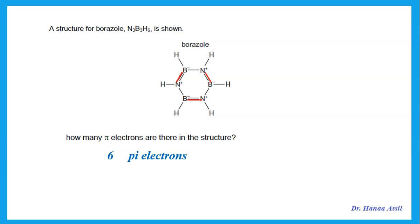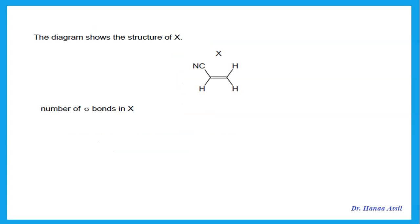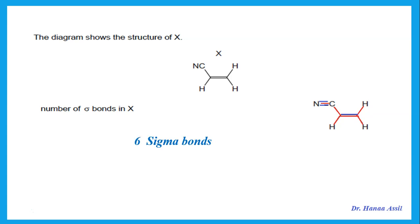The diagram shows a structure — what is the number of sigma bonds? Do not forget that the CN actually has a triple bond between it. Every single bond is a sigma, and the double and triple bonds each have one sigma. That is a total of six sigma bonds. Remember, the double bond is one sigma and one pi; the triple bond is one sigma and two pi.